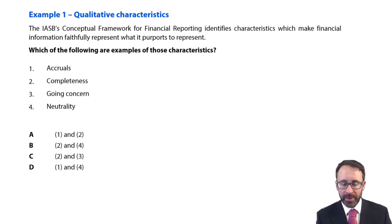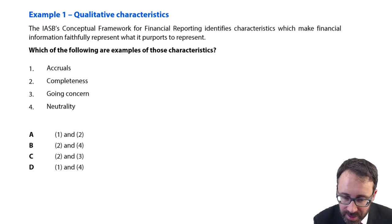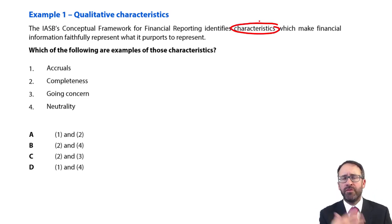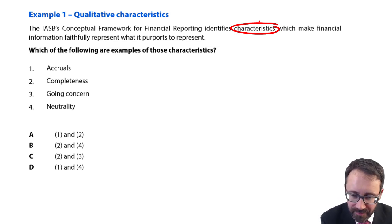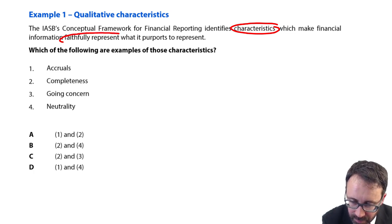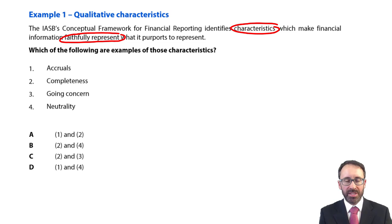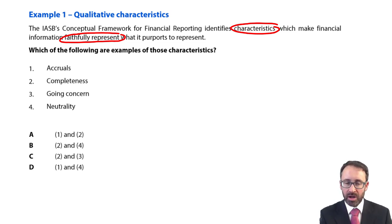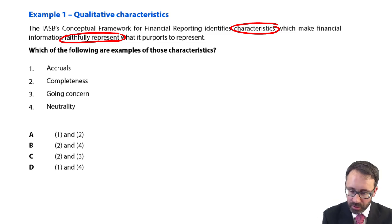The question says: the IASB's conceptual framework for financial reporting identifies qualitative characteristics — your fundamental and enhancing qualitative characteristics — which make financial information faithfully represent what it purports to represent. Which of the following are examples of those characteristics? You could do it by a process of elimination or you can just have the knowledge.